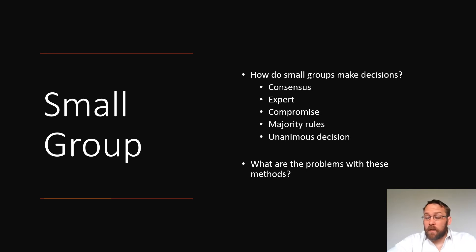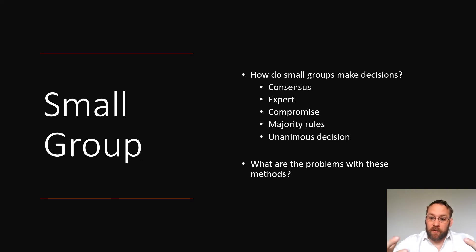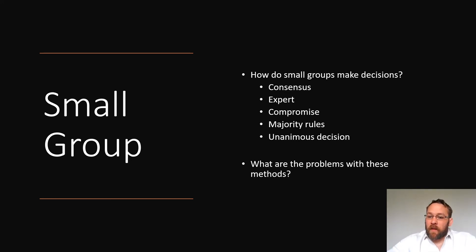How small groups make decisions will be on the exam, so make sure you're following along. Each of these methods has pros and cons depending on the situation. Consensus: people come in with multiple ideas and wrestle around to figure out the best solution — a third-way solution — where everybody agrees on the path forward. It usually takes a while, but at the end everyone feels like this is the best way forward.